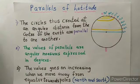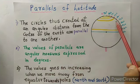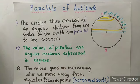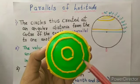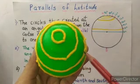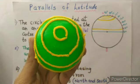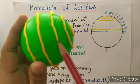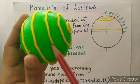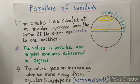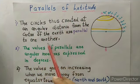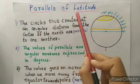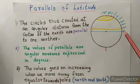Parallels of latitudes: latitudes are horizontal lines drawn on the globe. These horizontal lines are actually circles around the globe. These latitudes are parallel lines drawn on the globe and never meet each other. The circles created at an angular distance from the center of the earth are parallel to one another, and these latitudes are marked at an angular distance with the help of a protractor.